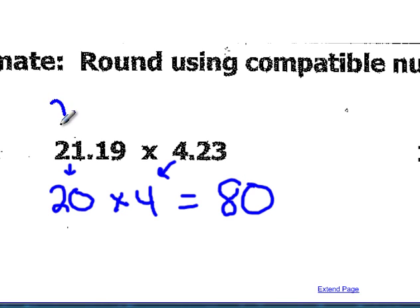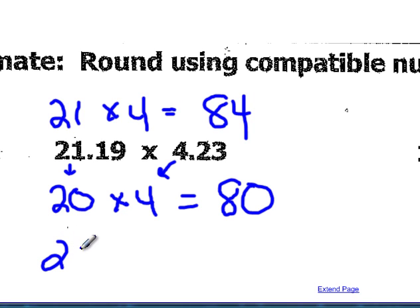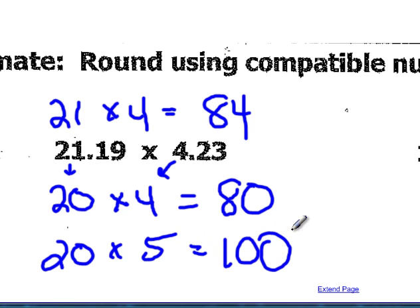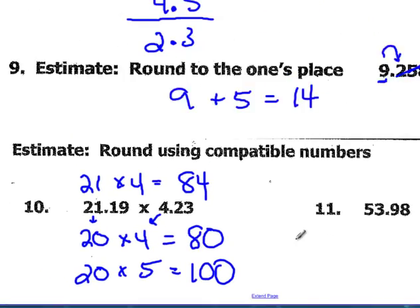Another possible solution would be 21 times 4. Again, most people can multiply that in their head. That's a good answer too. And one possible last answer would be 20 times 5, and that equals 100. So any one of those answers would be correct.